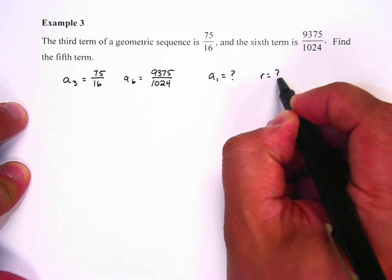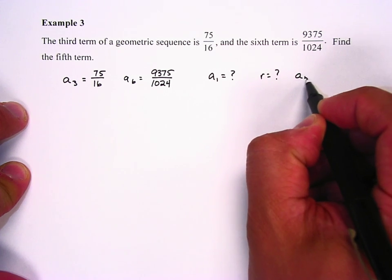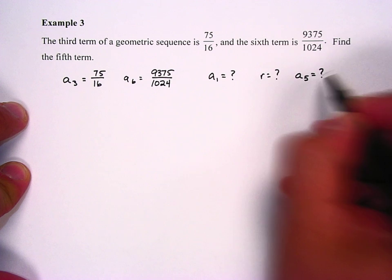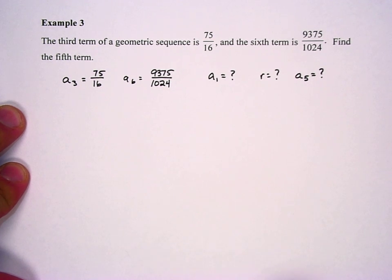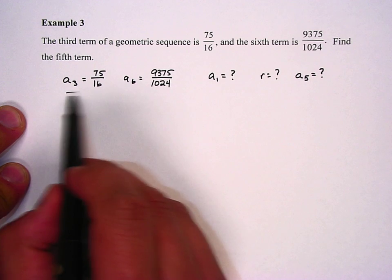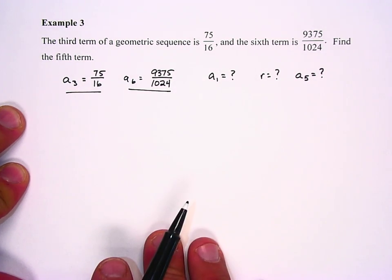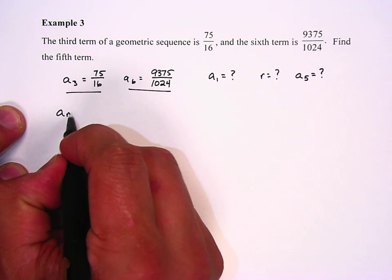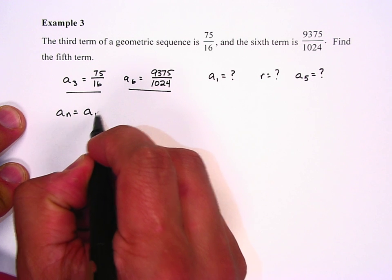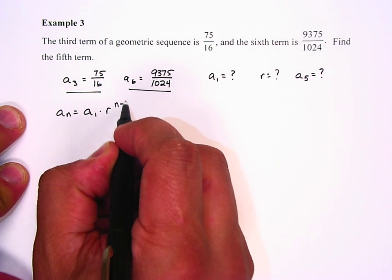We need to find r, which we don't know. And really we need to ultimately find a sub 5, which we don't know. Well, the best thing to do is to put these two terms into our general nth term formula, r to the n minus 1, like so.